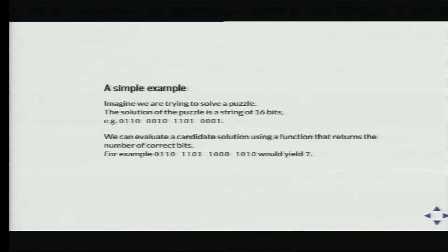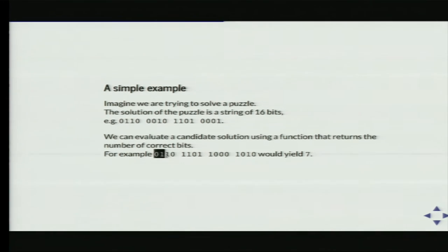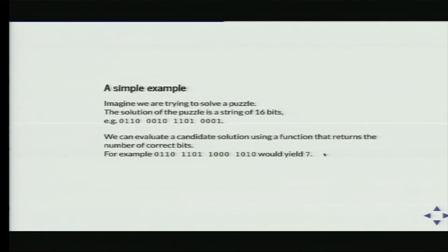Let's look at an example. Imagine we're trying to solve a puzzle whose solution is a string of 16 bits. We don't know the answer, but we can provide a possible solution and a function will tell us how many of the bits are correct. For example, if we try a certain string, it might yield seven — because the first four are correct, the second block is all wrong, the third block has two correct, and the last has only one. This is simple enough to brute force, but let's do it the genetic way.